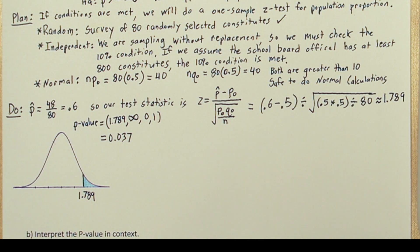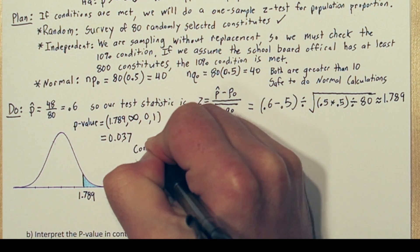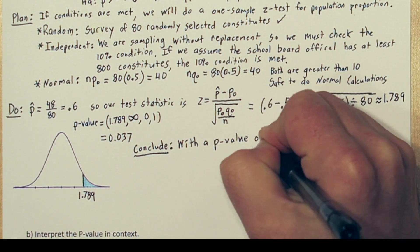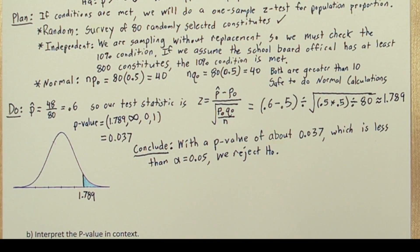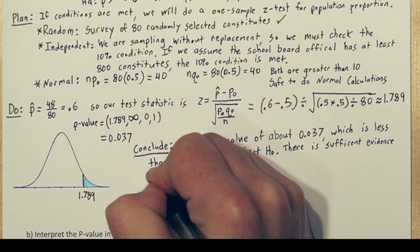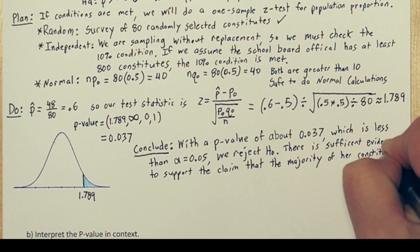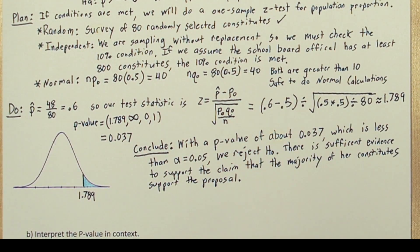Now we're ready to conclude. With the p-value of about .037 which is less than alpha equals .05, we reject the null hypothesis. There is sufficient evidence to support the claim that the majority of her constituents support the proposal.